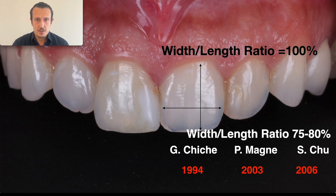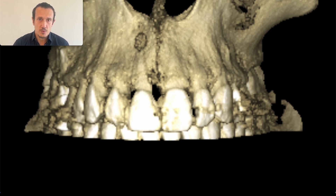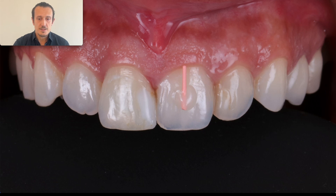We know from the literature that the ratio should be between 75 to 80 percent, and this is something we need to plan before the surgery so we can put the implant in a position related to the desired length of the natural teeth. On the CBCT done for implant placement, the natural crown of the teeth is in a very good proportion, meaning there is a discrepancy between the anatomical crown and the clinical crown because the tissue is covering the clinical crown and it looks shorter.